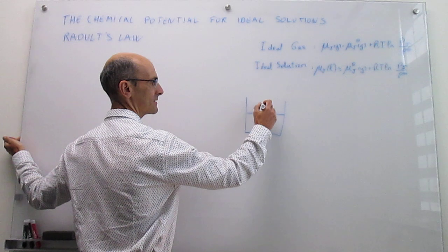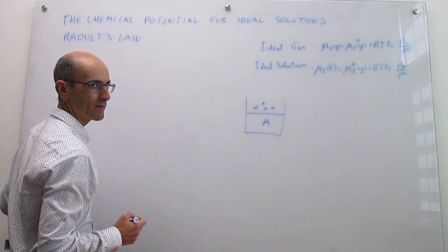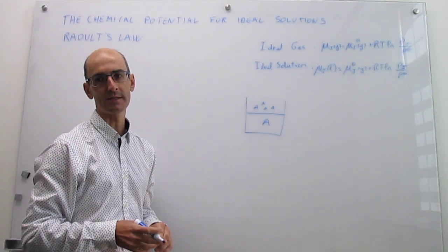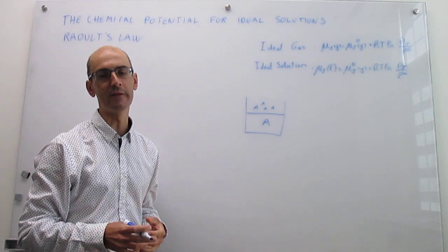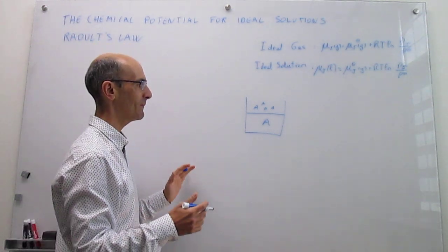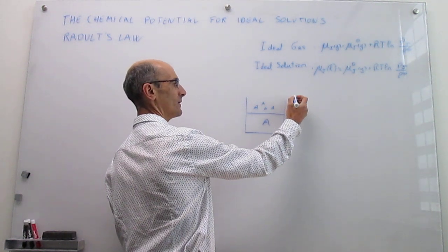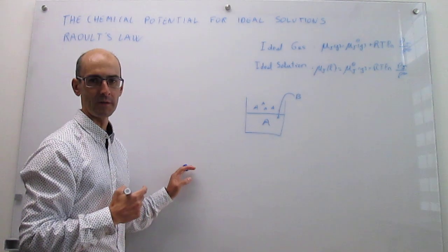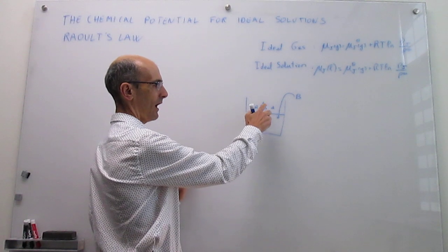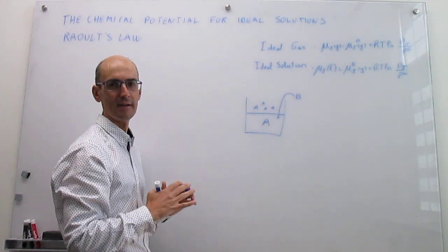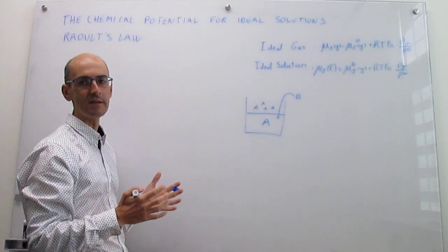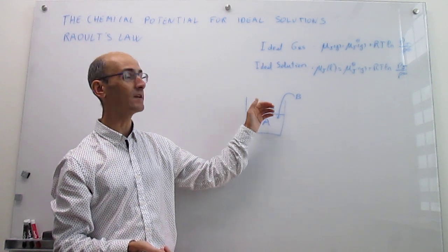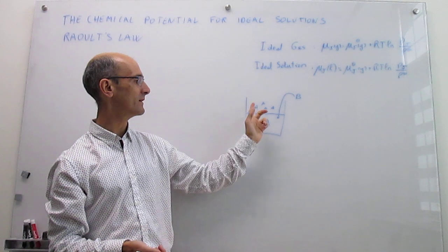Component A has some vapor pressure on top of it, which is characteristic of each liquid and also depends on temperature. For example, the vapor pressure of ether is much greater than the vapor pressure of water at room temperature. What Raoult was doing is saying: I'm going to add some other component B to make a little bit of a mixture. The question is, how does that affect the vapor pressure of A? The finding is that the vapor pressure of A decreases when you add a little bit of B to the solution.